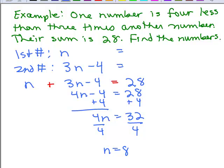So we can do this problem with a single variable. n is 8, and here we have the other number is going to be 3 times n. So it's 3 times 8 minus 4, and that's going to give you 20.